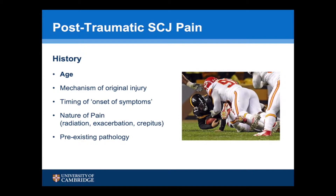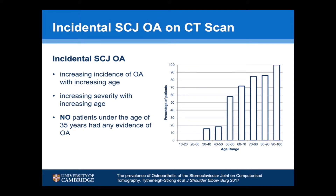Diagnosing the cause obviously starts with a history. The most important factor is age. We looked at the sternoclavicular joint of 500 patients undergoing a CT scan for chest pathology and found an increasing severity of osteoarthritis with increasing age. Interestingly, no patients under the age of 35 had any evidence of osteoarthritis. However, by the age of 50, nearly 60% of patients had osteoarthritis, and at the age of 100, 100% of patients had osteoarthritis.